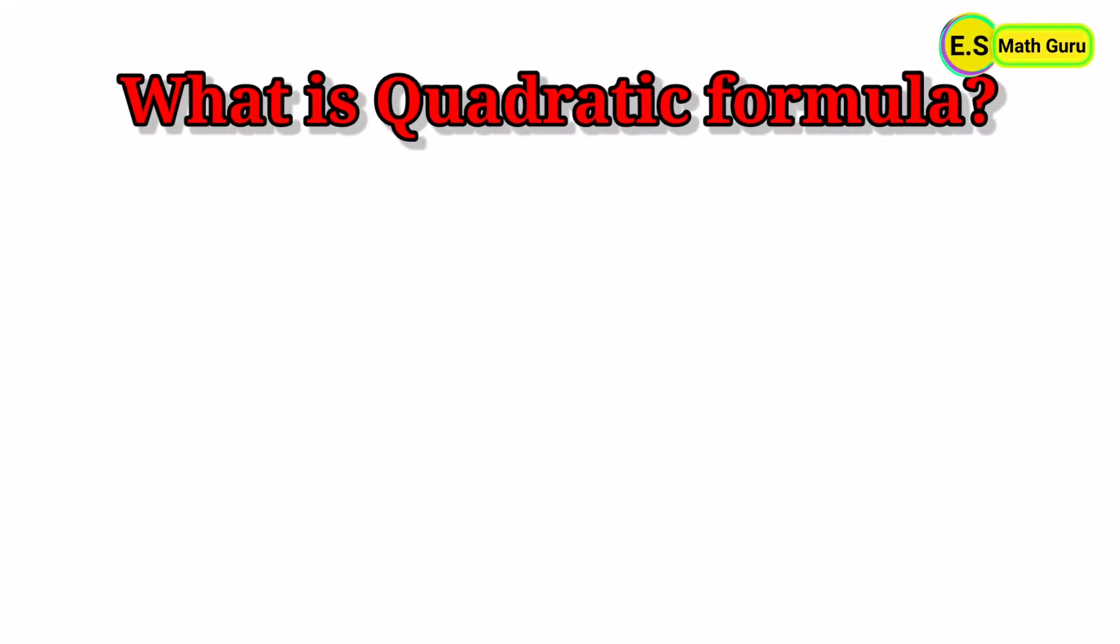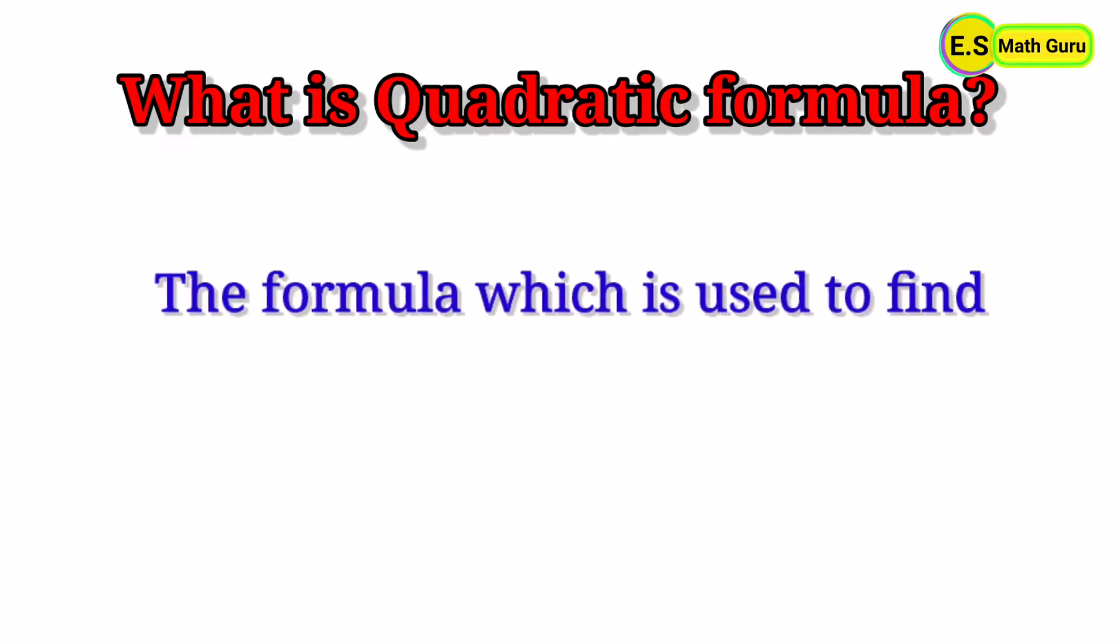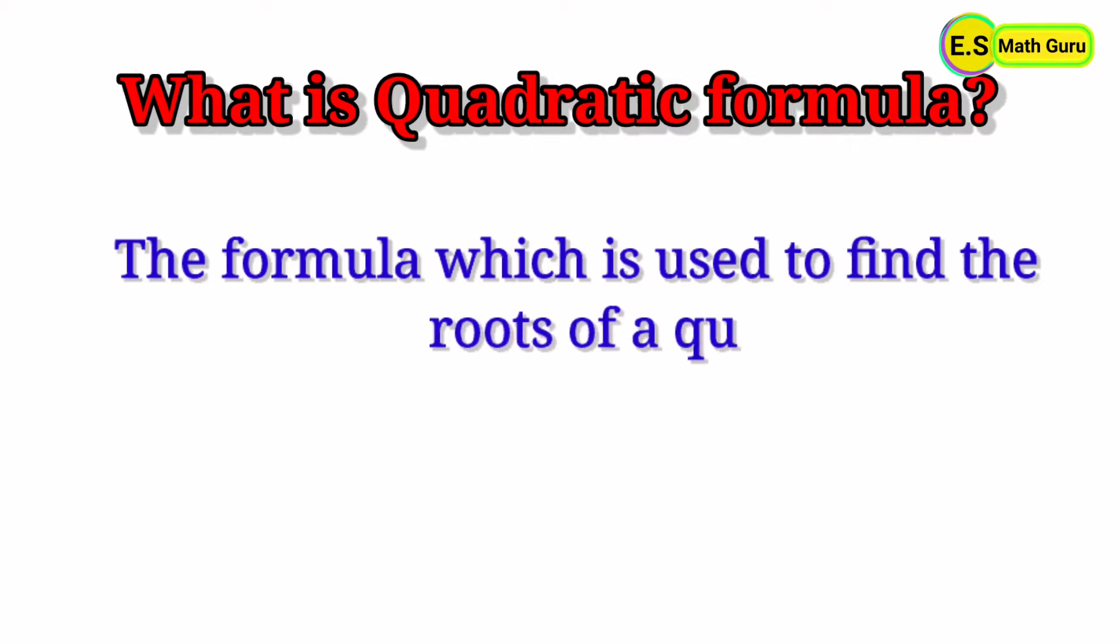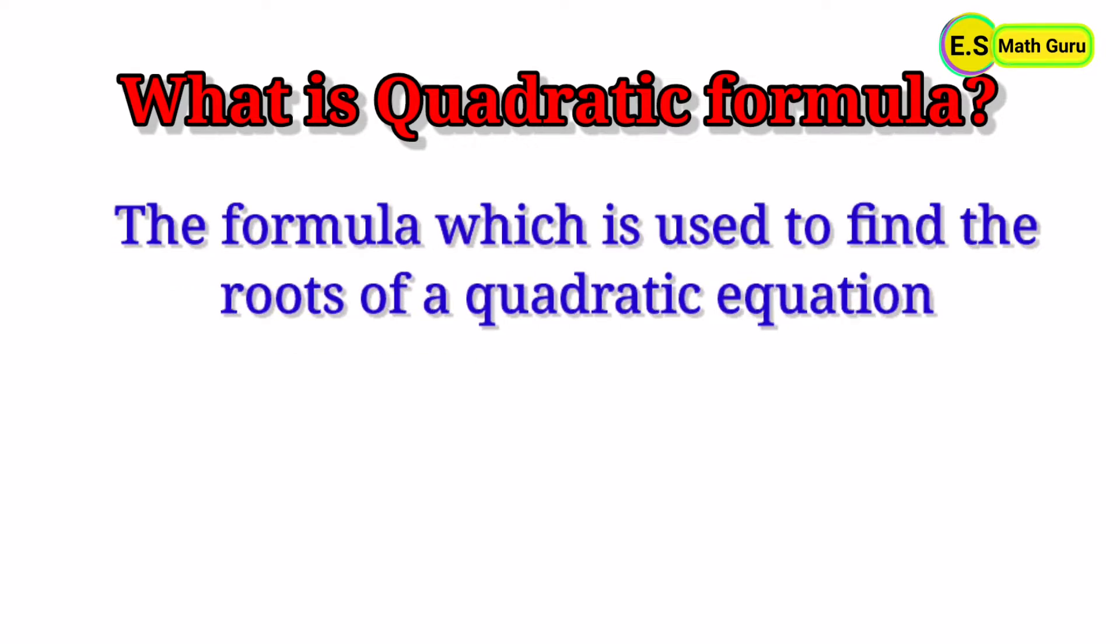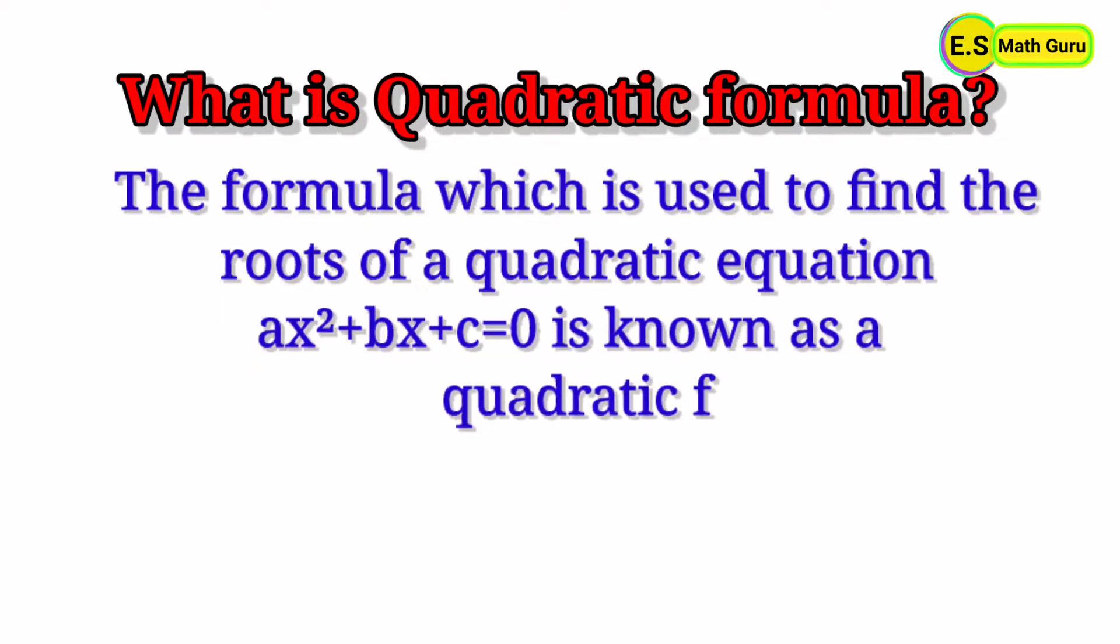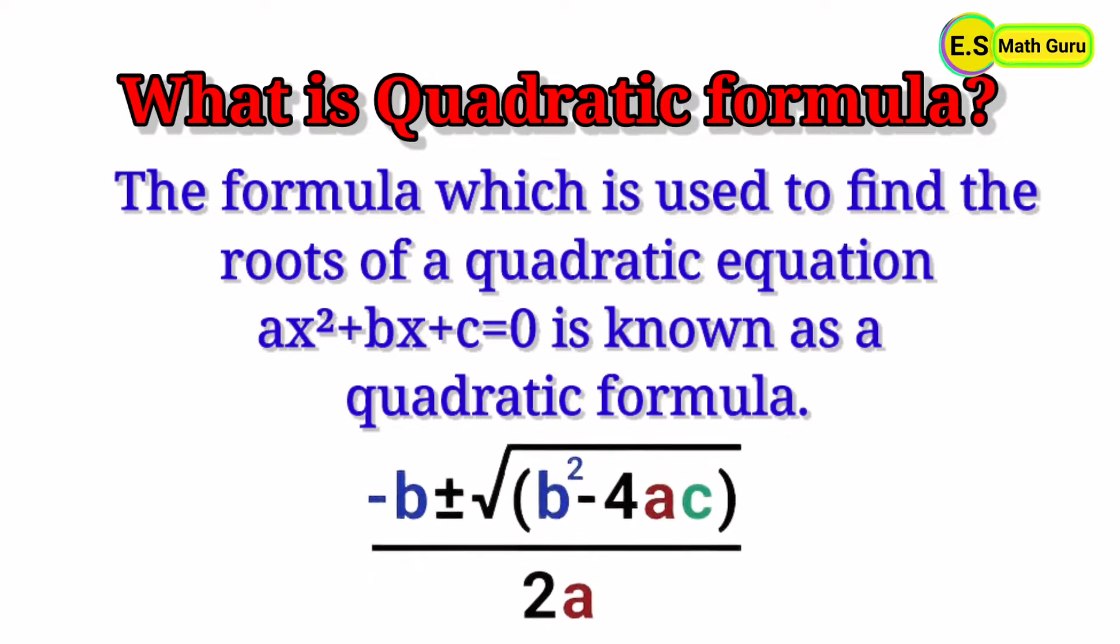Today's concept: What is a quadratic formula? The formula used to find the roots of a quadratic equation ax² + bx + c = 0 is known as the quadratic formula: x = (-b ± √(b² - 4ac)) / 2a.